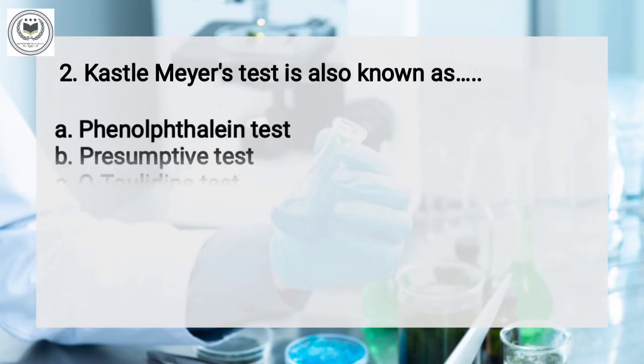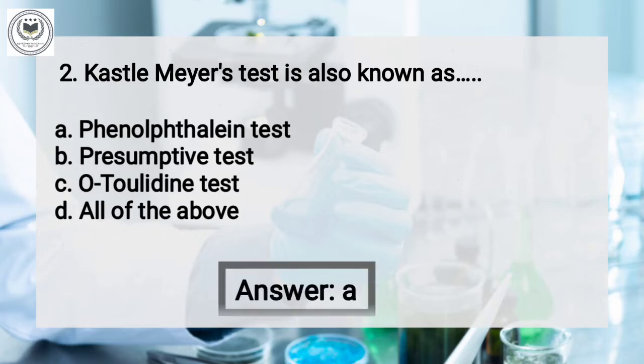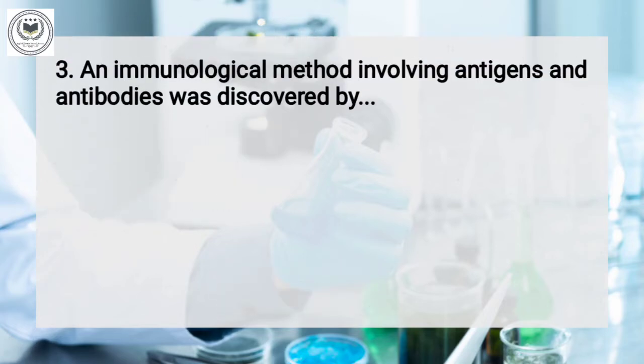The second question is: Castelmayer's test is also known as — option A: Phenophthalene test, option B: Preceptive test, option C: Tuladine test, option D: All the above. And the answer is Phenophthalene test.